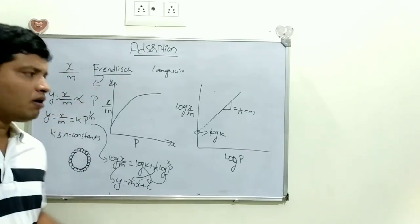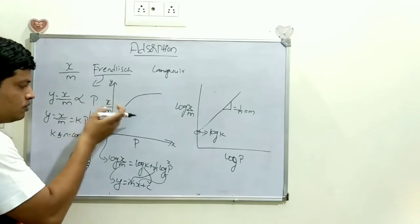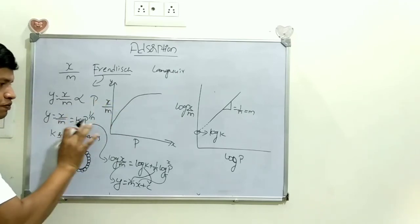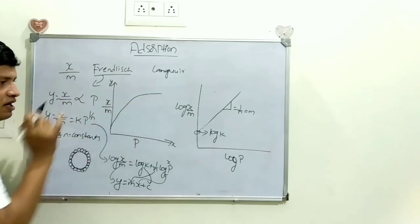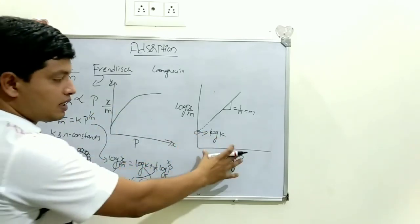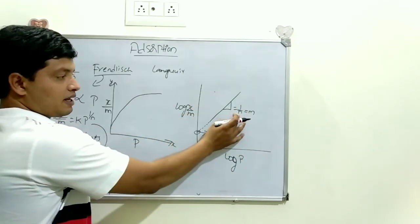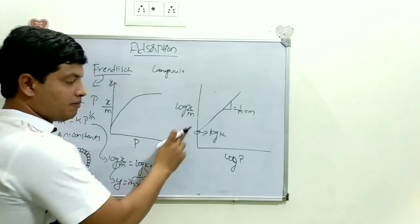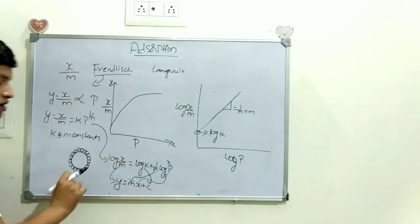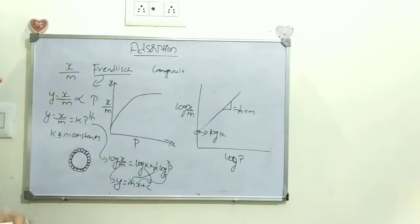In the plain form of the equation we cannot calculate the values of the constants from a graph. By converting to log form and drawing a straight-line graph, we can calculate n from the slope and k from the intercept. That is why we convert the Freundlich equation into the y = mx + c form and draw the graph.